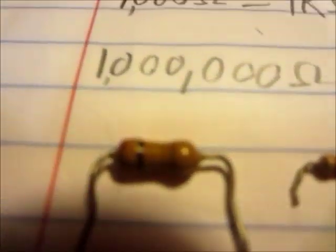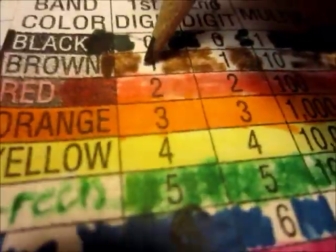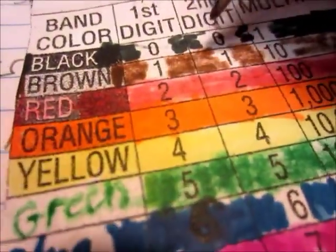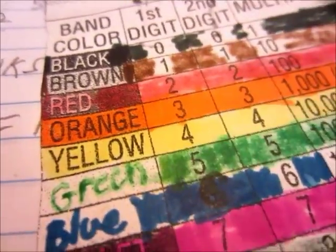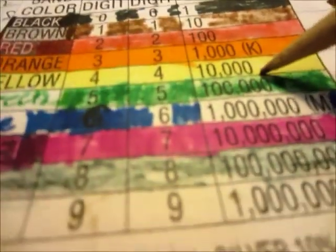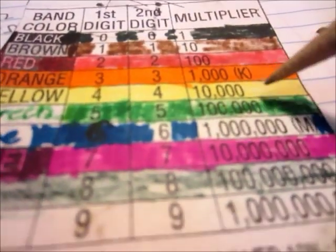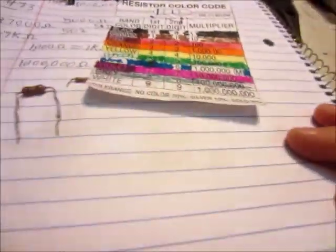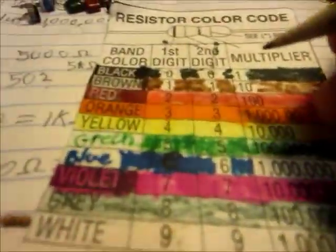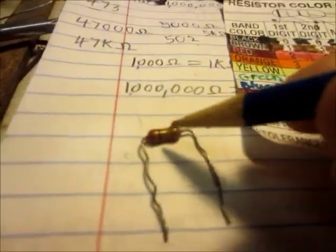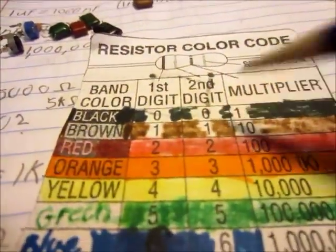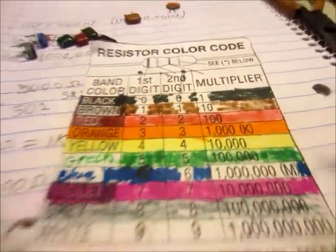The first two are the actual digits. This one is brown, black. So we have brown and a black, that's 10. So we have 10 ohms. Then the last digit is yellow. Yellow is down here, that's the multiplier. The third one is the multiplier. So we have brown, black, yellow: 1, 0, and then 10,000.